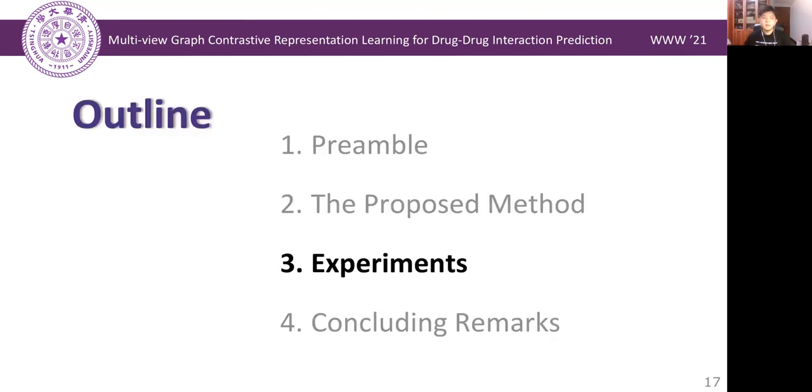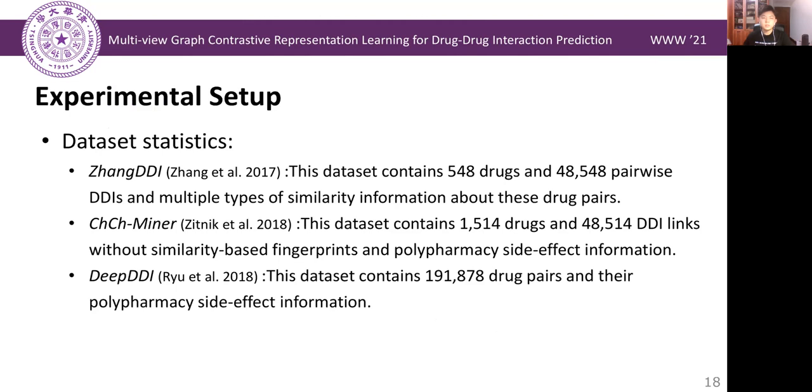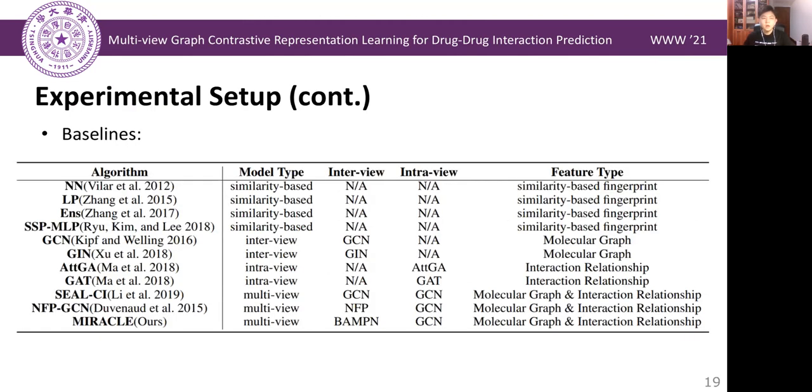Well, let's quickly look at the experiments. We conduct experiments on three real-world benchmark datasets with different scales. The compared baseline methods include traditional similarity-based methods and graph-based models. Note that the graph-based baselines not only include models on a single view, but also take multi-view methods into consideration. Thus, the experiments also validate the effectiveness of the bond-aware message-passing networks with attentive pooling.